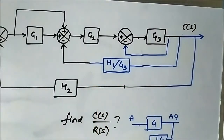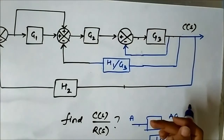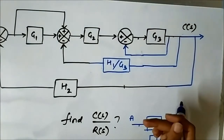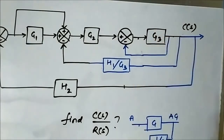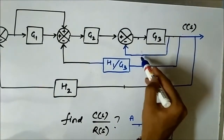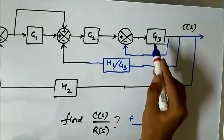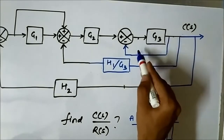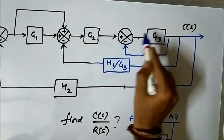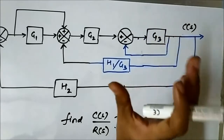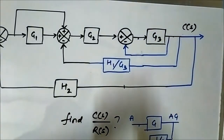Now this is a classic negative unity feedback connection where the feedback path gain is 1. So this summer and the G3 block can be replaced by the overall transfer function G3/(1+G3).